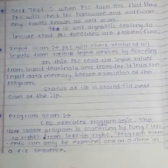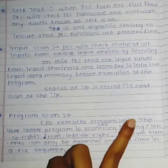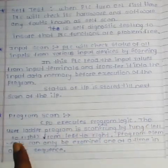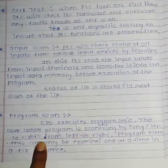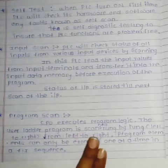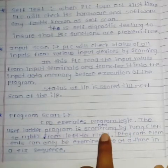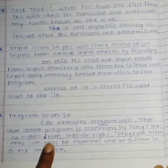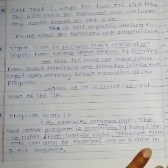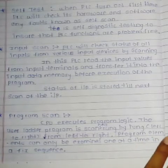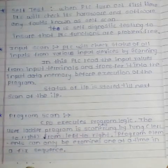Next is the program scan. In the program scan, the CPU executes the user ladder program. The user ladder program is scanned from left to right, and the program elements can only be examined one at a time in a fixed sequence.